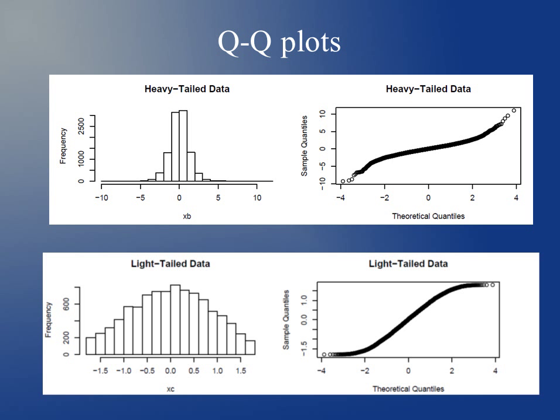One way we can check to see if our errors are normally distributed is using QQ plots. On the right are the QQ plots and on the left are histograms of data. If we have heavy-tail data, it results in a QQ plot with deviations from the straight line that we want, with some deviations at the extreme values — the far left and the far right. For light-tail data, where our variance isn't as great as we would expect in normally distributed data, we also have deviations at the extreme values from that straight line.